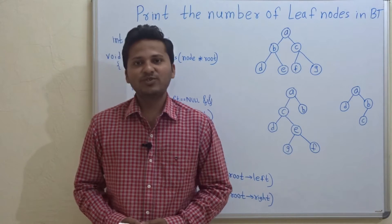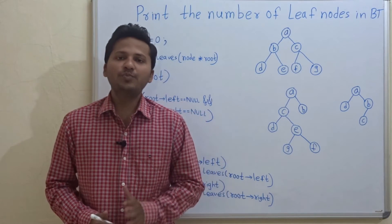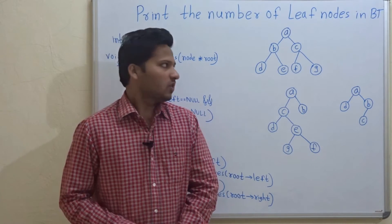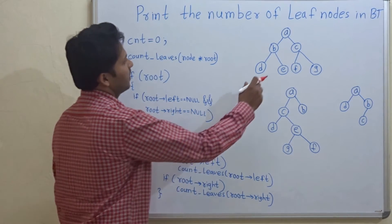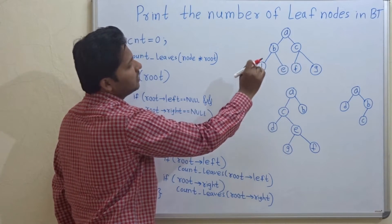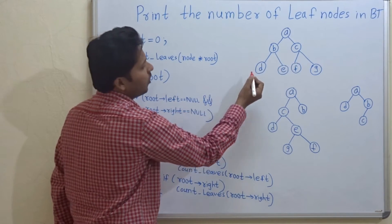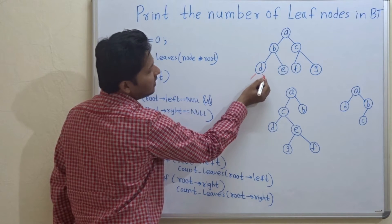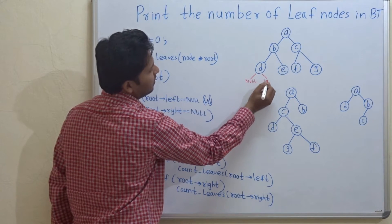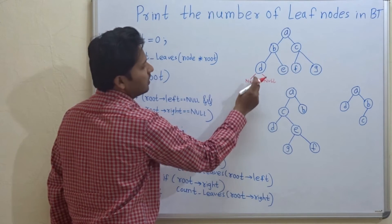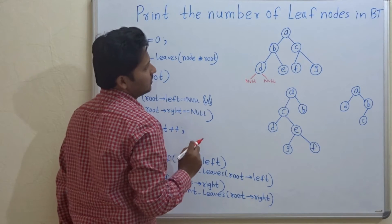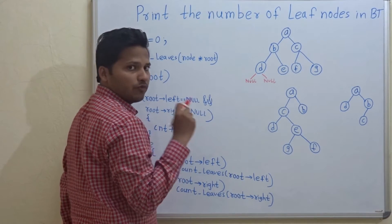Hello friends, today we are going to see how to print the number of leaf nodes in a binary tree. So let's see an example. A leaf node is a node for which the left child and right child are null. Such a node is called a leaf node. So we have to count the number of leaves.